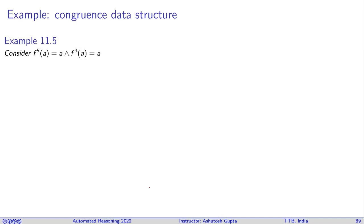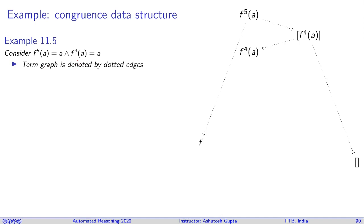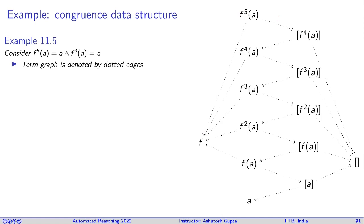Let's look at an example with two equalities to build the equivalence classes triggered by them. First we draw the term graph. In the term graph, there is a node F^5(A) which has a left child F and a right child F^4(A) in a list. Continuing, F^4(A) has a left child F and F^3(A) in a list with an empty list. This gives the total set of terms appearing in the analysis of these equalities and their parent relations.